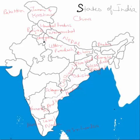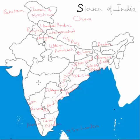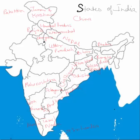To the north of Karnataka is a small state surrounded by a larger state on one side and Karnataka on the other — this is Goa, quite famous for its beaches. There is also a large state covering a huge part of central India, bordered by Chhattisgarh, Telangana, Karnataka, and a small portion of Goa — that state is Maharashtra.